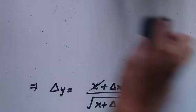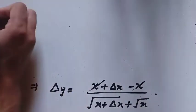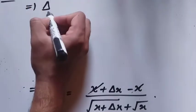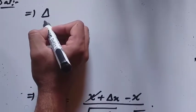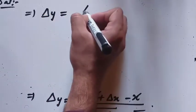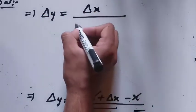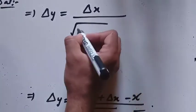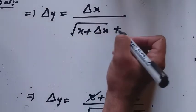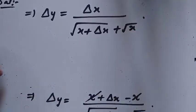Now I can write that delta y is equal to delta x divided by under root of x plus delta x plus under root of x.